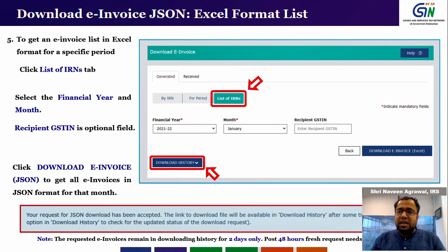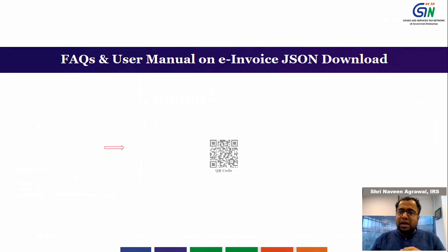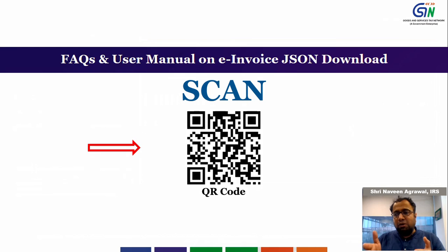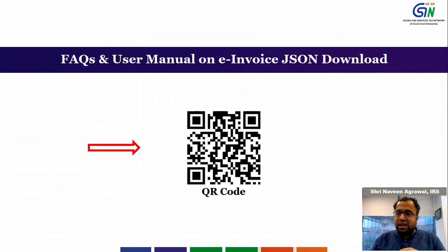So this is how this functionality works. This was a brief guide to help you better navigate and use this functionality. We have also created a detailed manual for e-invoice JSON download. You can reach the download manual by scanning the QR code shown on screen. This was a quick overview of the e-invoice JSON download functionality. Thank you all for joining this webinar. If you have any questions or queries, you can put them in the chat box. Thank you.